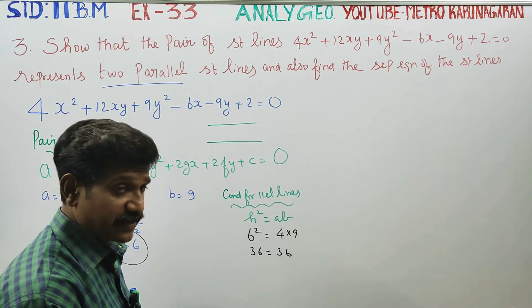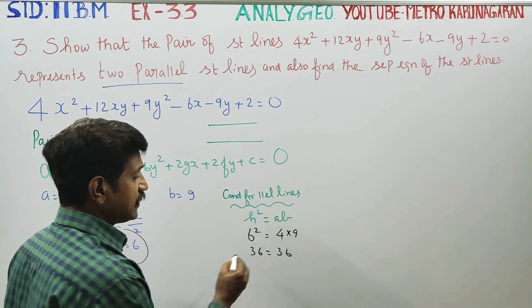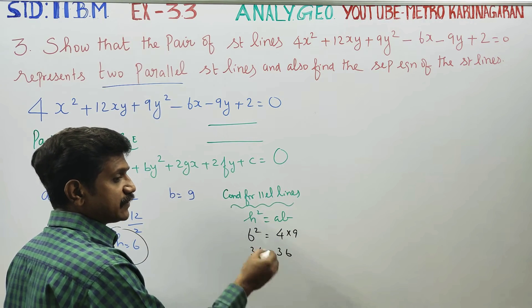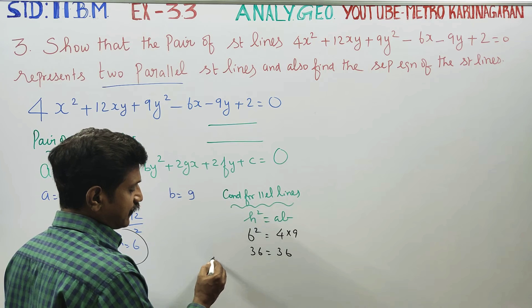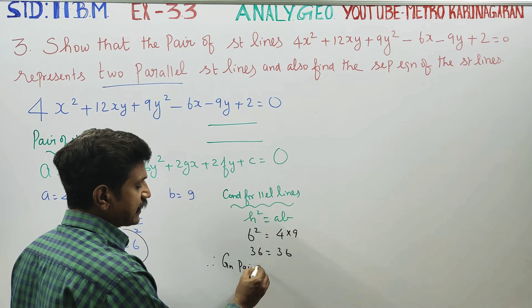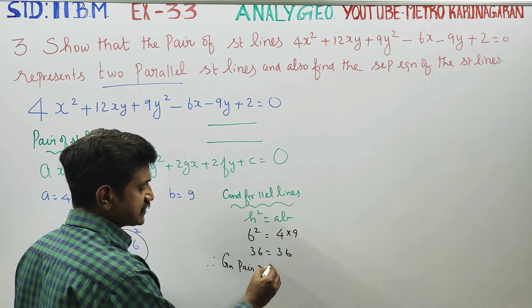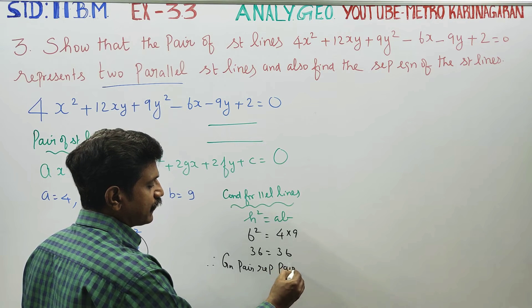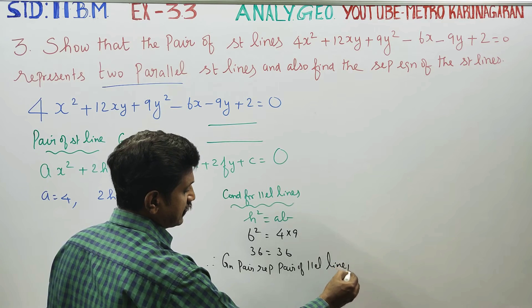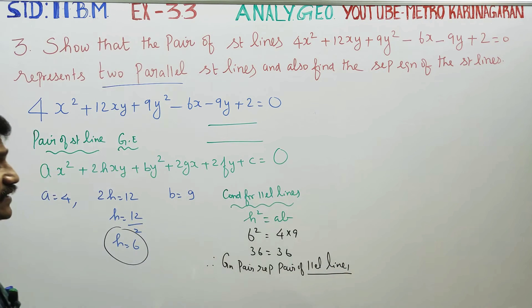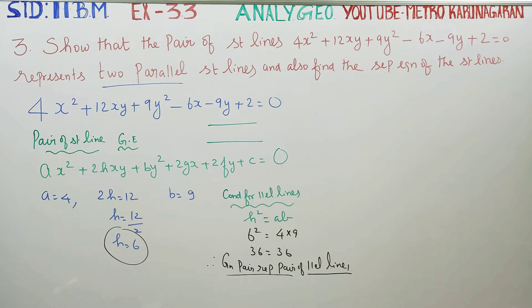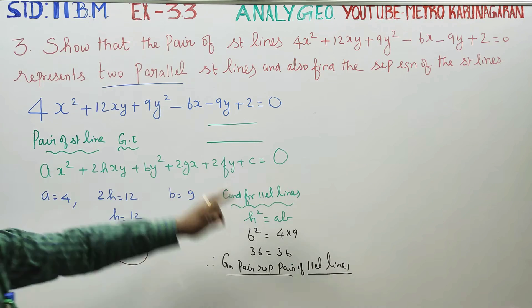36 = 36. Since h² = ab, the condition is satisfied. Therefore, the given pair of straight lines represents a pair of parallel lines.